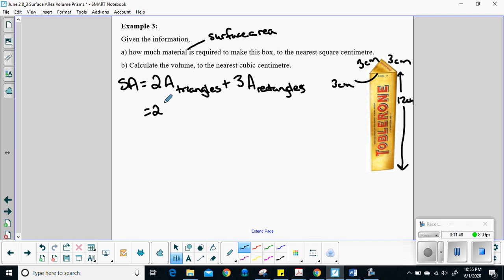So surface area is going to be equal to, what did we say? I have two areas of my triangles plus I've got those three rectangular sides, three area of the rectangles. Well, how do I find the area of the triangle? So that's going to be half times base times height. How do I find the area of the rectangle? Well, that's length times width. So how does that translate to my actual picture? So the base of my triangle. So let's see. There's my triangle there. So I'm just going to redraw it over here. So it's nice and big. So my base is going to be three centimeters. The height is here. Oh, I don't have that number. Oh.